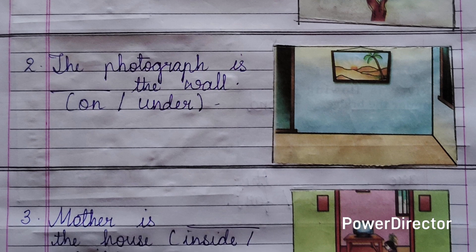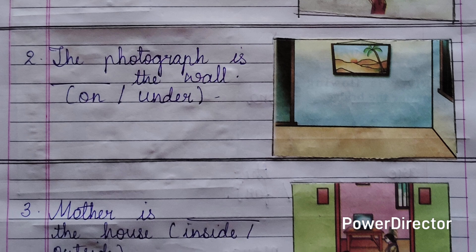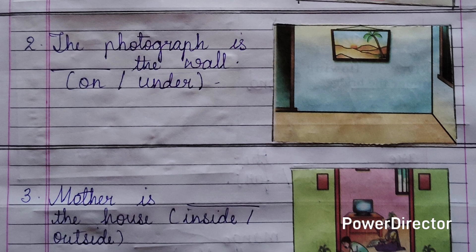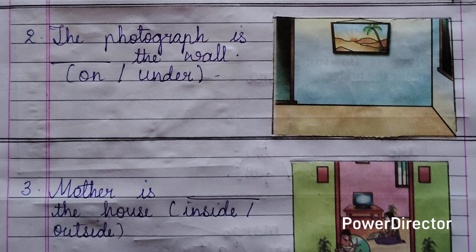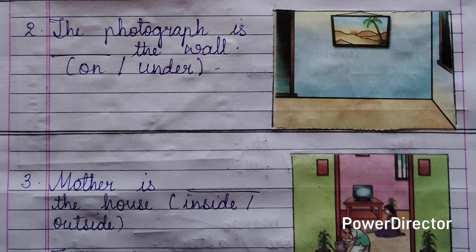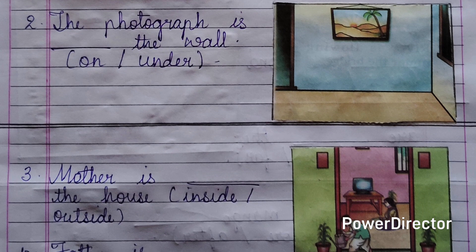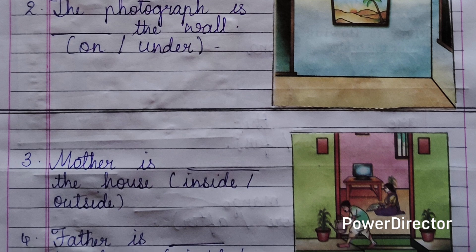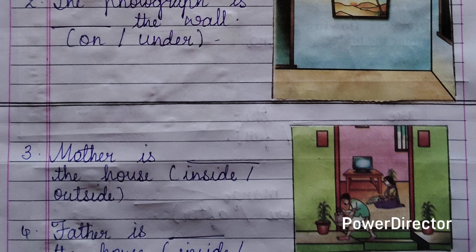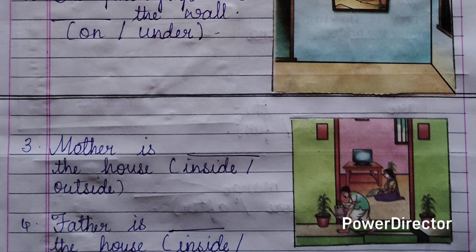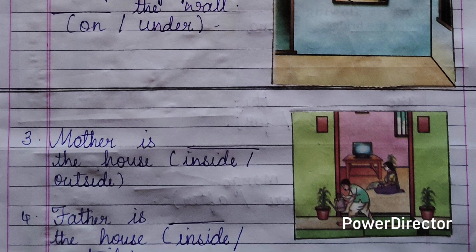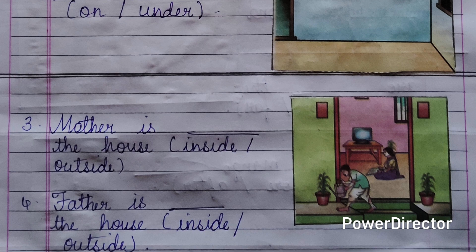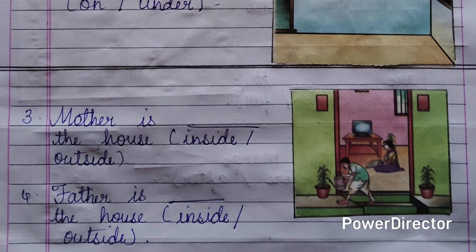For number three and number four, the picture is the same, so by seeing the picture you have to answer. Number three: mother is dash the house — inside or outside. The answer is inside. Number four: father is dash the house — inside or outside. The answer is outside.